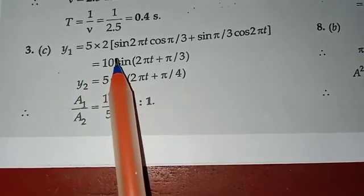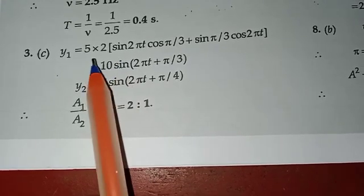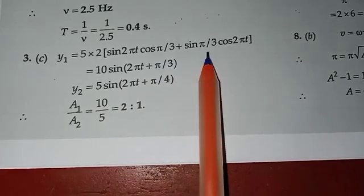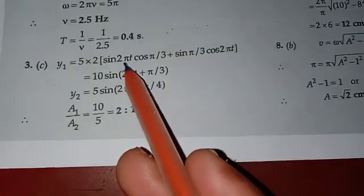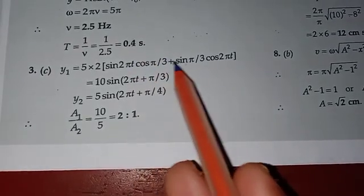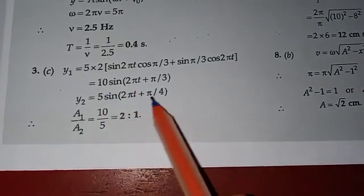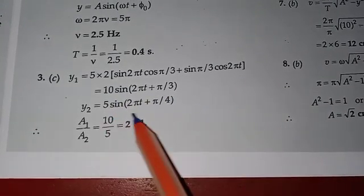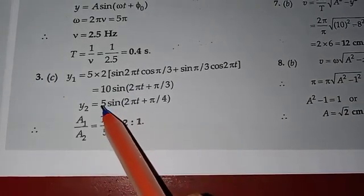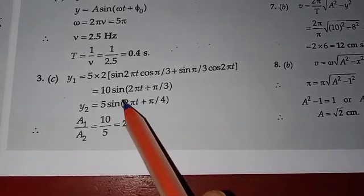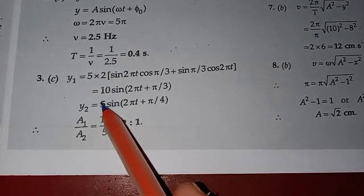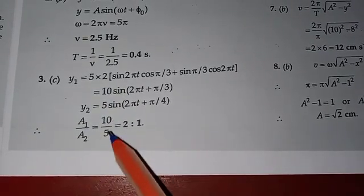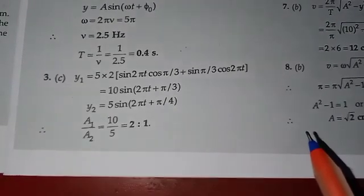The equations are y1 = 5 sin(2πt) + √3 cos(2πt). Using the identity with cos(π/3) = 1/2 and sin(π/3) = √3/2, and combining, we get a resultant amplitude of 10. The ratio of amplitudes is 10:5, i.e., 2:1. Option C is correct.